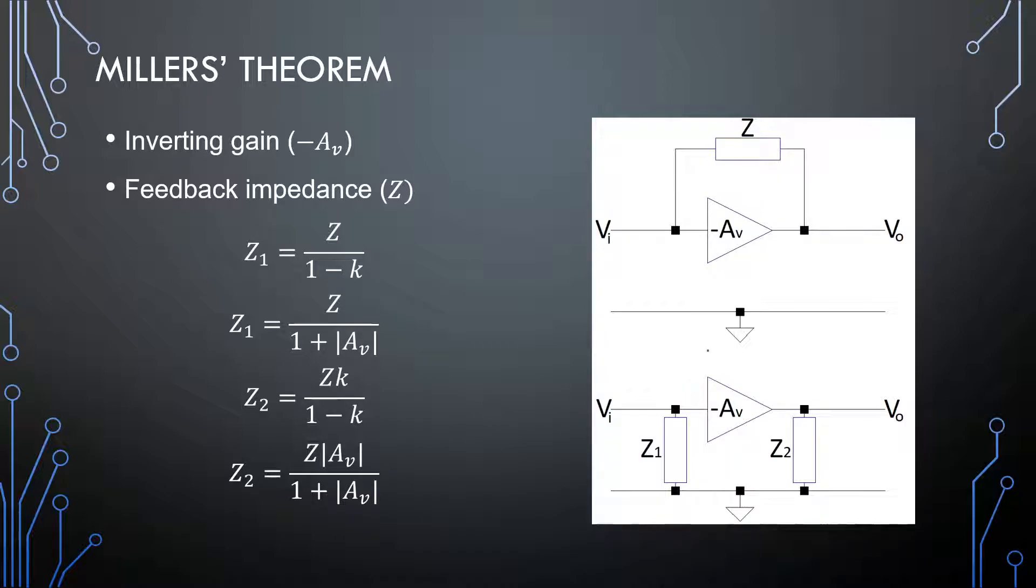So first off, we use Miller's theorem when we have an inverting gain or inverting amplifier and when we have an impedance sitting over our amplifier like this. So typically some form of feedback or a parasitic capacitance.